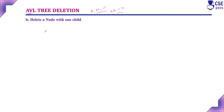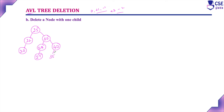Consider this AVL tree: root 25, left subtree with 22 and 20, and right subtree with 30, 28, 27, 40, and 35. The balance factors are: leaf nodes are 0, node 22 is +1, node 20 is 0, node 28 is +1, node 30 is 0, node 25 is -1. This tree is balanced and satisfies the AVL property — it is a binary search tree with all balance factors within range.